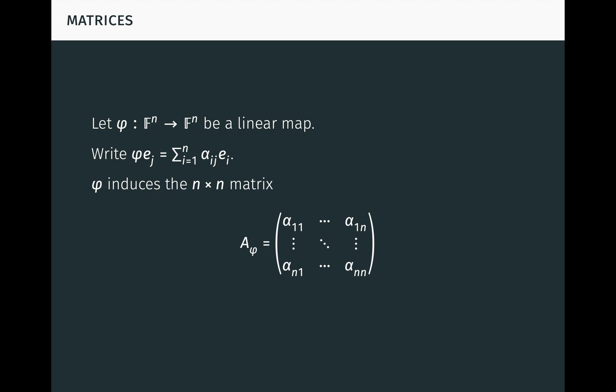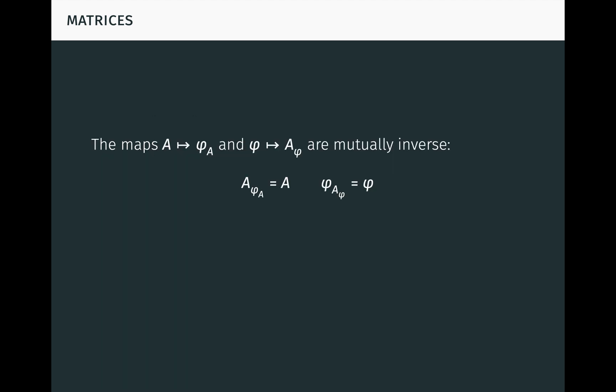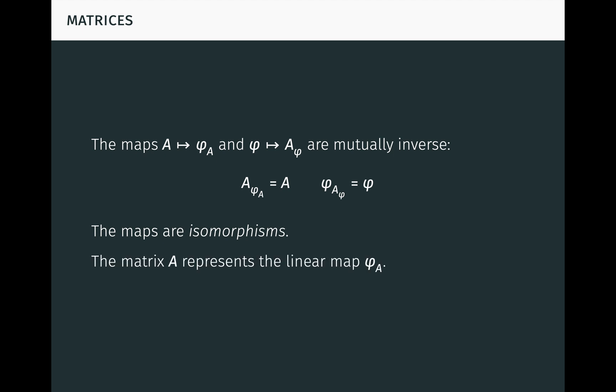Notice that for an entry α in the matrix, the first number in the subscript of α indicates the row position, while the second number indicates the column position. So α_ij is the entry in row i, column j, whereas α_ji is the entry in row j, column i. Importantly, the maps sending a matrix to its linear map and sending a linear map to its matrix are mutually inverse — in fact, isomorphisms between the ring of n-by-n matrices over F and the ring of linear maps on F^n. For this reason, we say that the matrix A represents the linear map φ_A, and the two are essentially interchangeable.